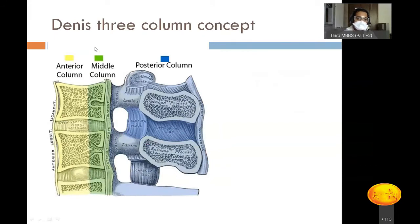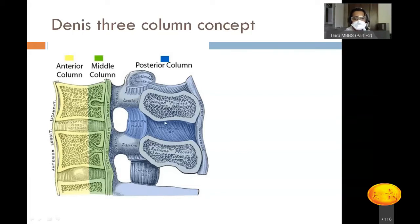Denis and others described the three-column concept of the spine. The anterior column includes the anterior longitudinal ligament, the anterior half of the vertebral body, and the anterior half of the disc. The middle column comprises the posterior half of the vertebral body and the posterior longitudinal ligament. The posterior column includes the pedicle, lamina, spinous process, and associated ligaments. Injury to one or multiple columns determines the stability or instability of a given injury.